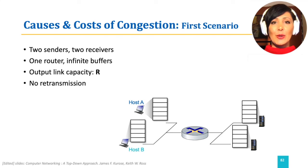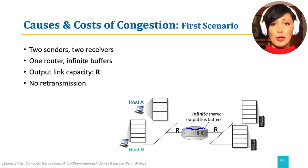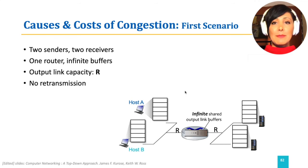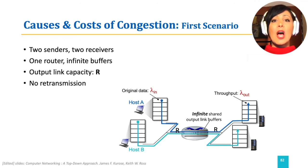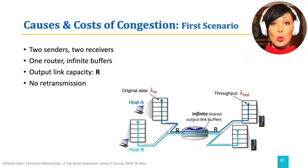In the first scenario, we consider two senders and two receivers that have data connections. Their communication goes through a common router which is on both of their paths. Assume that the router has an outgoing link capacity of R and an infinite buffer. Assume both senders are sending data at the rate of lambda-in bytes per second. Since there is an unlimited buffer in the router, with increasing transmission rate the queue at the router will grow but will not drop any packets. Therefore, there will be no losses and no retransmissions.